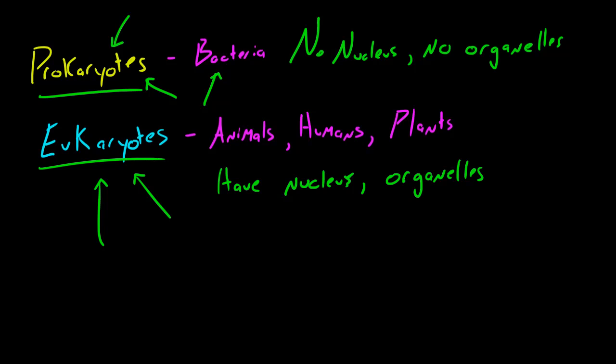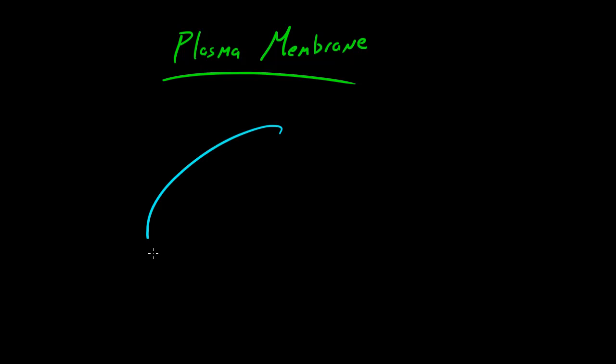So let's get started. The first piece of the cell I want to talk about is called the plasma membrane. Now the plasma membrane is also called the cell membrane, and if you guys remember from the last couple videos I said that the membrane was basically the skin of the cell.